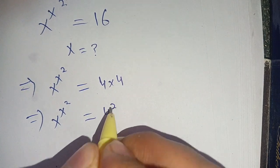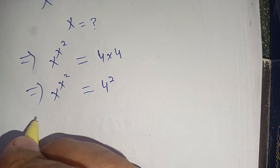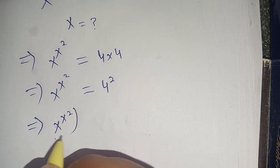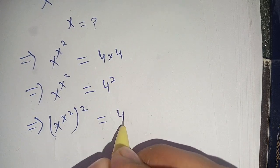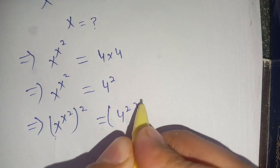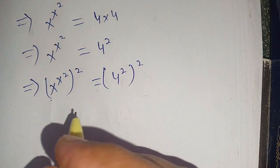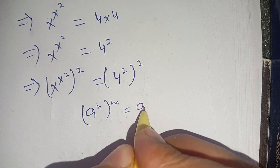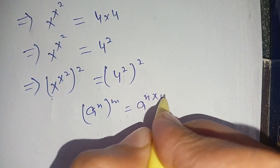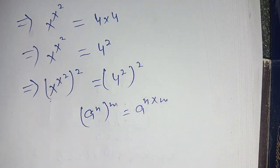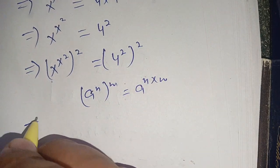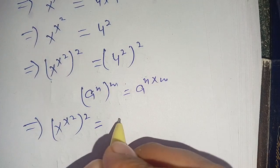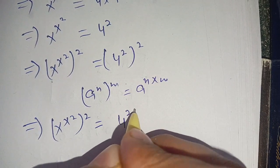This becomes 4². Now, squaring both sides, we write (x^(x²))² = (4²)². We know that (a^n)^m = a^(n×m). Applying this identity on the right-hand side, we get (x^(x²))² = 4^(2×2).